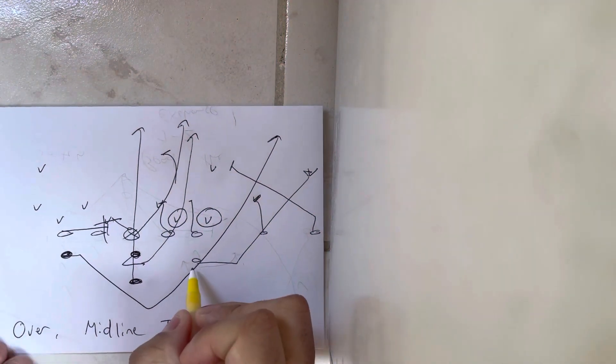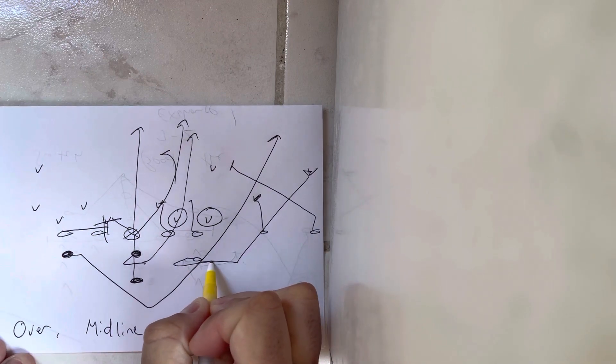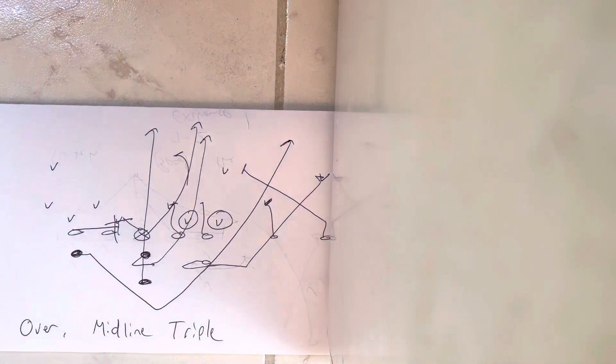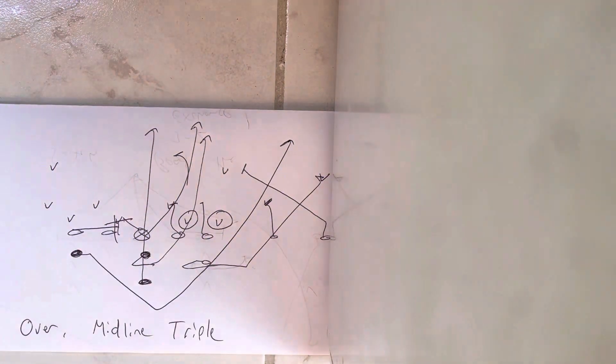So what happens is this A-back is going to hammer step, take two diagonal steps, and then on his fourth step turn his belly button to the line of scrimmage. So he's got to leave at the snap—he's going to hammer step at the snap, take two diagonal steps at 45 degrees, and then turn up at 60 degrees to catch the pitch, hit the seam, and score. So he's going to be really moving.